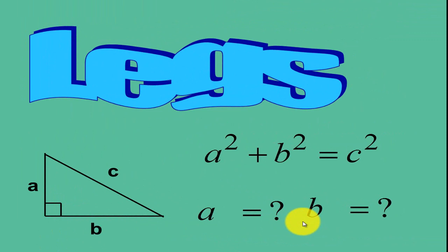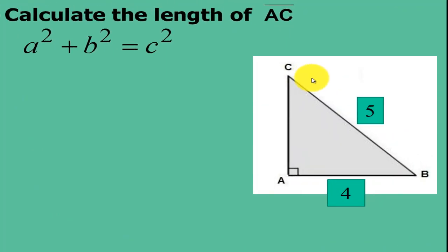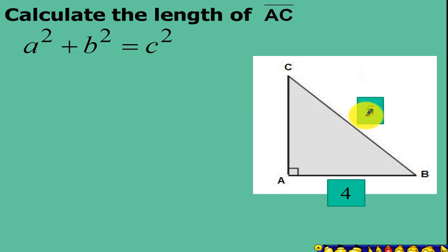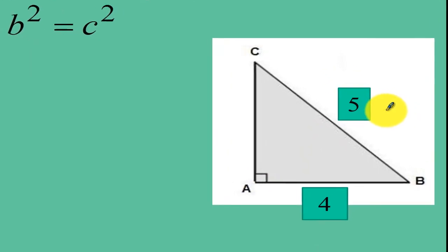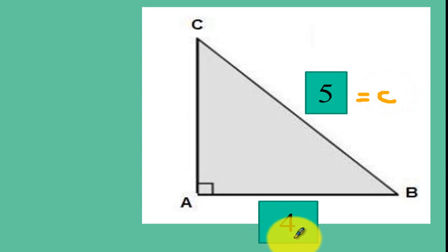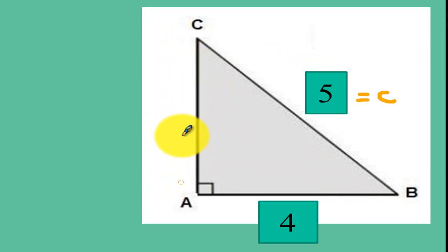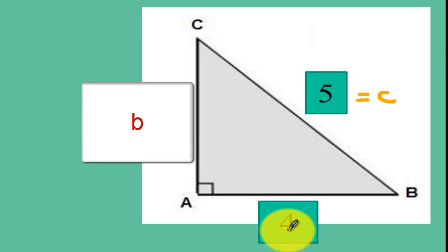Alright, now what if one of the legs is missing? So here will be the procedure to solve for one of the legs. In this case, you have to label first the measurement of the sides of your triangle. So 5 here is your hypotenuse — we know that this is your hypotenuse because it is across your right angle. So label this as your C. Now 4 is your leg because it's one of the sides containing the right angle. So this is leg 1 and this will be your leg number 2. Now it doesn't really matter how you assign the name of your leg. You can name this as leg A or you can also name this as leg B.